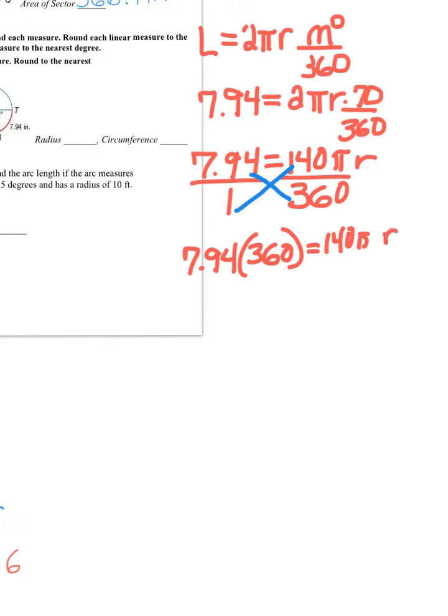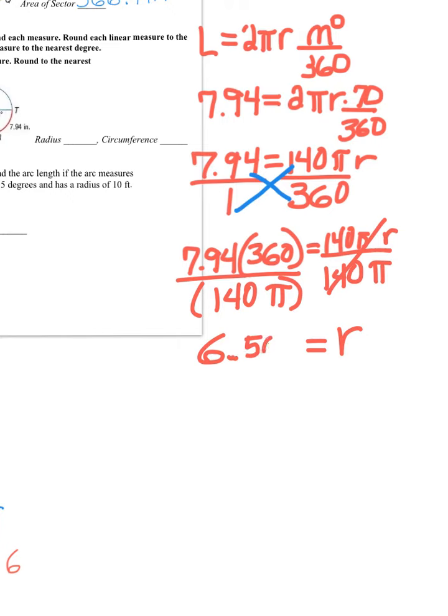Okay, 140 pi r, and now all I have to do, since I'm looking for the radius, is divide by 140 pi. And that with the radius, it's by itself. So, when you multiply 7.94 times 360 divided by 140 pi, which I recommend that you put that in parentheses, then you simplify, and the radius is going to be 6.50 when you round it to the hundredth place, and that would be inches.